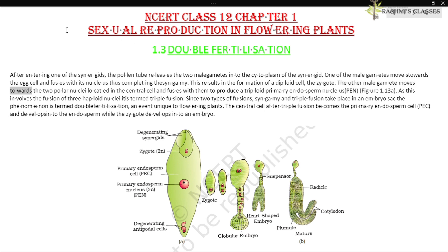The other male gamete moves towards the two polar nuclei located in the central cell and fuses with them to produce a triploid primary endosperm nucleus (PEN), as shown in figure 1.13a. Since this involves the fusion of three haploid nuclei, it is termed triple fusion. Since two types of fusions — syngamy and triple fusion — take place in an embryo sac, the phenomenon is termed double fertilization.